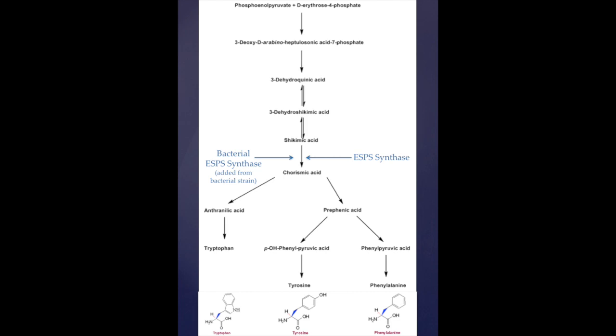Bacterial ESPS synthase found in a bacterial strain can be isolated and inserted into the canola's genome, thus allowing the biosynthetic pathway to continue and produce those essential compounds. Therefore, when glyphosate is added to the plant, the plant can still produce those compounds and survive.